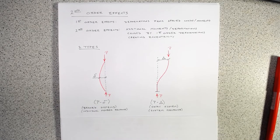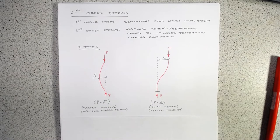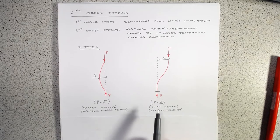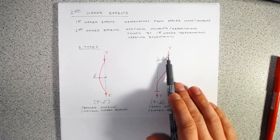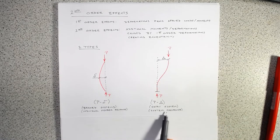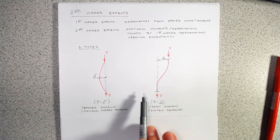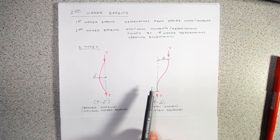This is why Euler buckling is derived for this case. The other case we are going to deal with is what's called P-big-delta, or often just called P-delta effects. This is what happens when we have a sidesway of our compression member. We get a rather large eccentricity delta, so we have a moment caused by P times that distance. P-delta is really a system-level response — you'll see this with the entire story of a building moving over, creating an additional bending moment demand in the column.